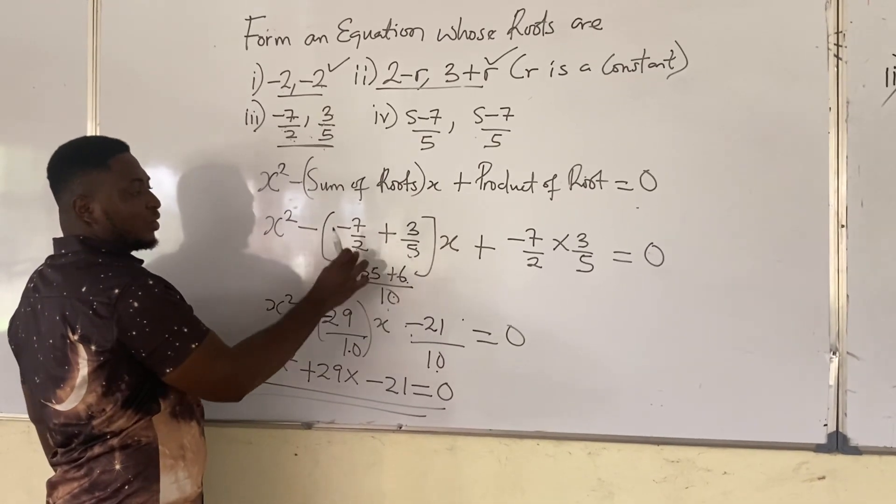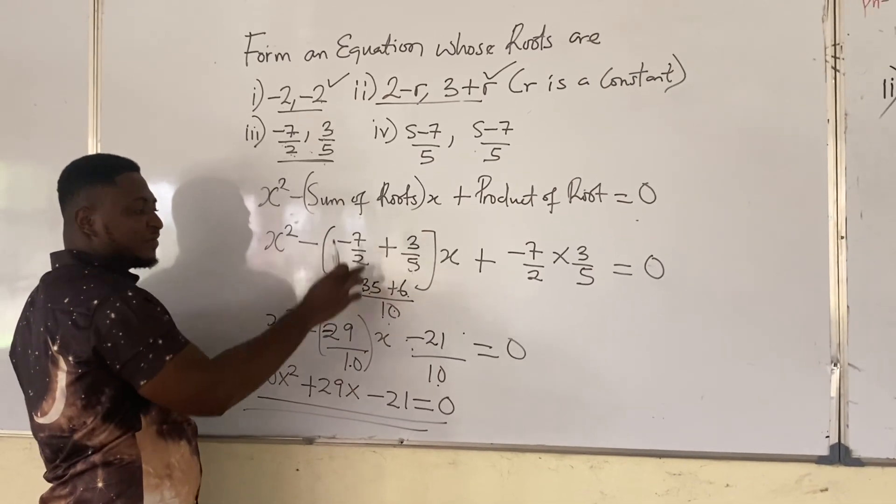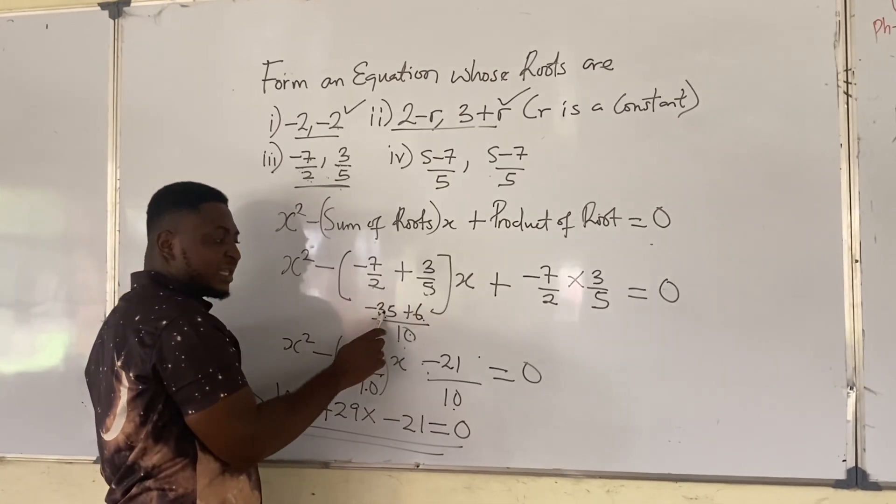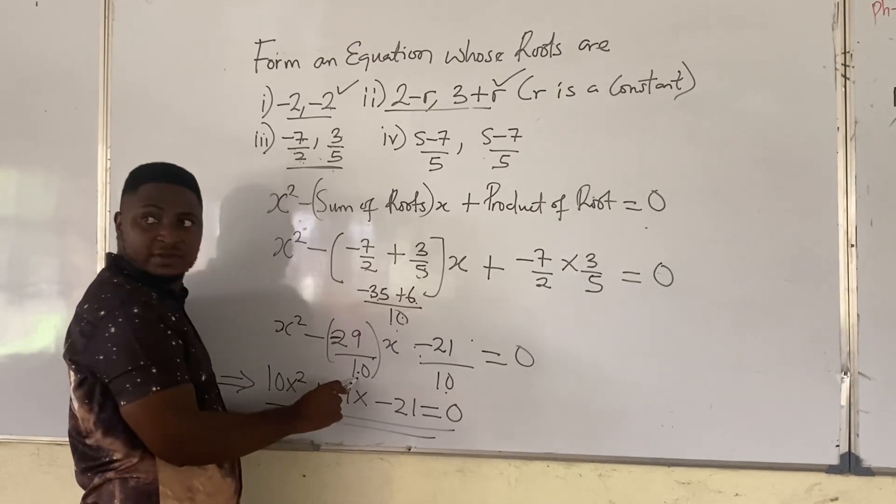2 times 5 is 10. We'll resolve this. 10 divided by 2 is 5. 5 times minus 7 is minus 35. 10 divided by 5 is 2. 2 times 3 is 6. So that minus 35 plus 6 is minus 29 all over 10.